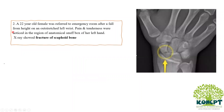I'll read this case scenario for you. A 22-year-old female was referred to the emergency room after a fall from height on an outstretched left wrist. Pain and tenderness were noticed in the region of the anatomical snuff box of the left hand. X-ray showed fracture of scaphoid bone.